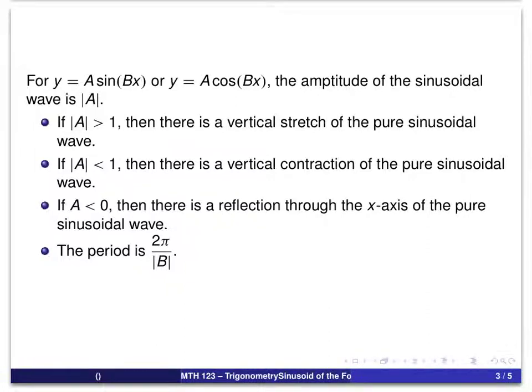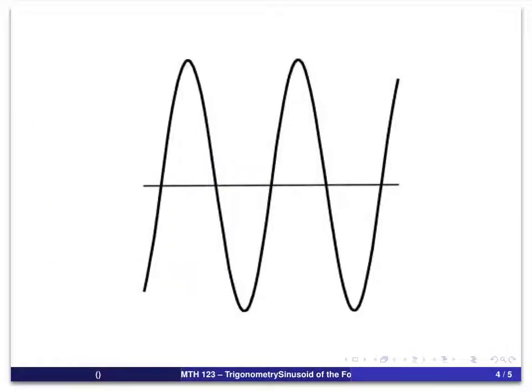If you recall those sine and cosine curves, both of them more or less look something like this. And notice that the vertical or y-axis has not been drawn in here. And to some extent, that's about the only distinction between the sine curve and the cosine curve.